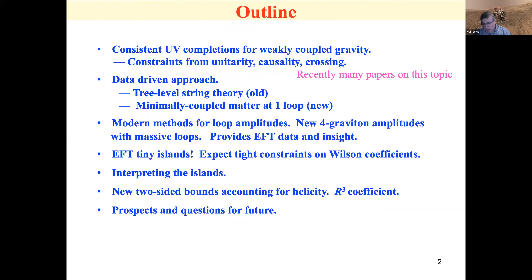The way we approach this is the way many people are working on it right now: you use the basic information of unitarity, causality, and crossing, and you try to find constraints on what's a consistent EFT. Our approach is very pragmatic — we're going to be looking at data, not experimental data, obviously, but theoretical data to guide our thinking and point out features we should be looking for to guide future research.